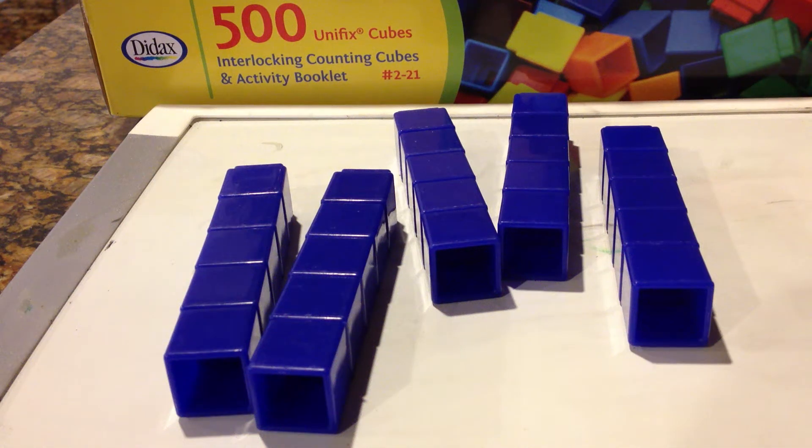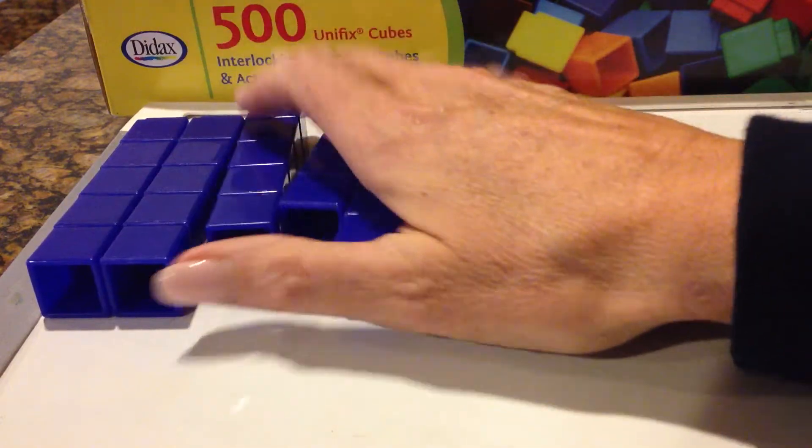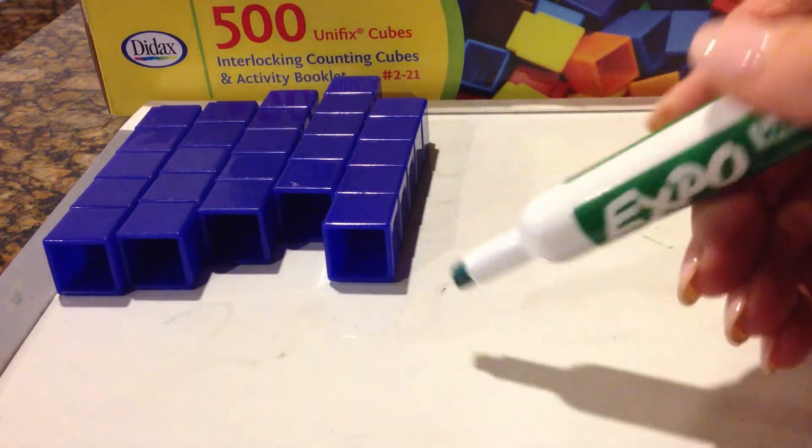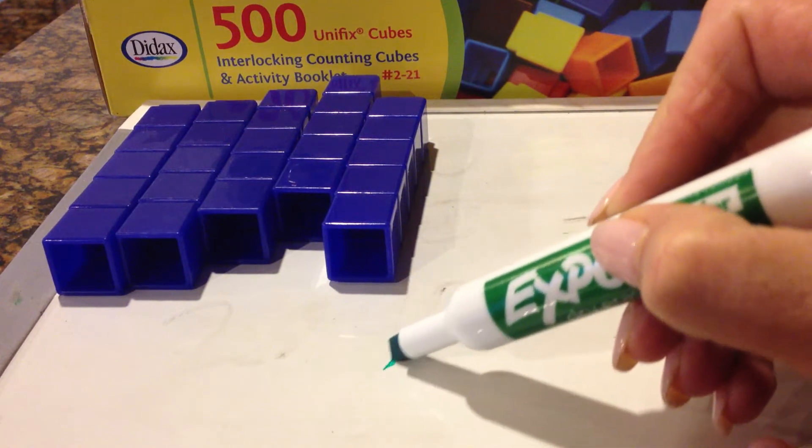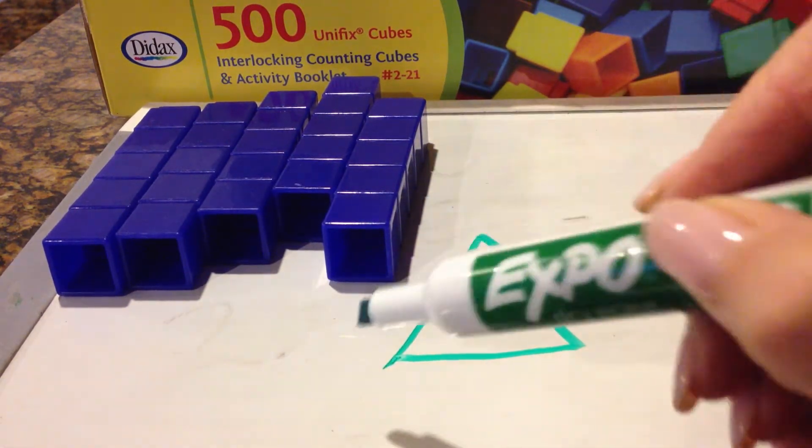Many times when children are learning their multiplication fact families, what we do in school is introduce a fact family as a triangle. So the triangle looks like this, and we say something like,